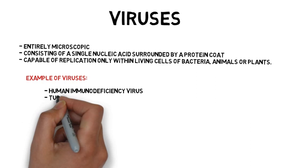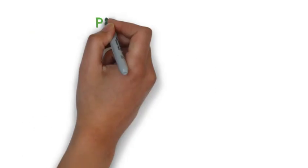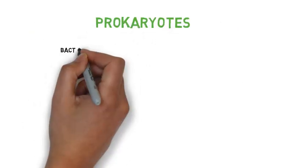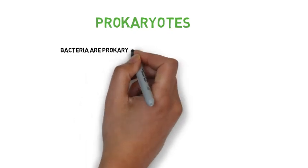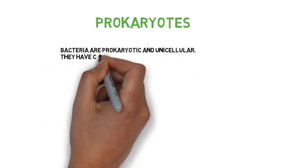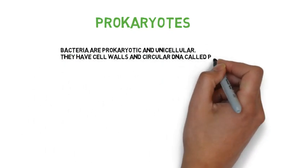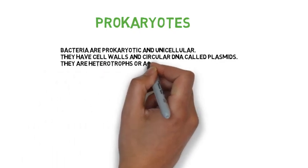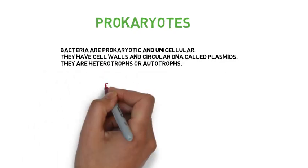Prokaryotes. Bacteria are prokaryotic and unicellular. They have cell walls and circular DNA called plasmids. They are heterotrophs or autotrophs. Example: L. bulgaricus.